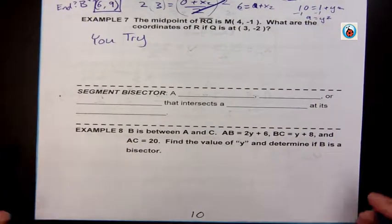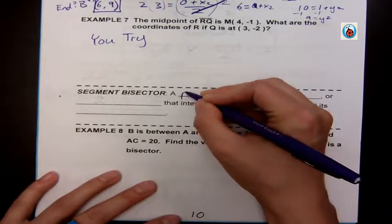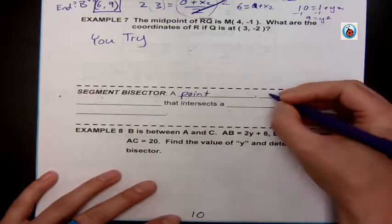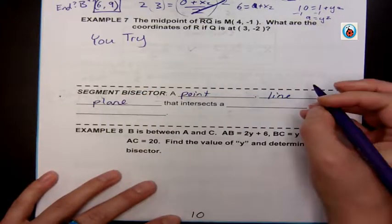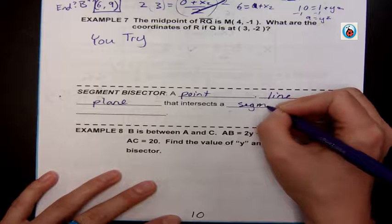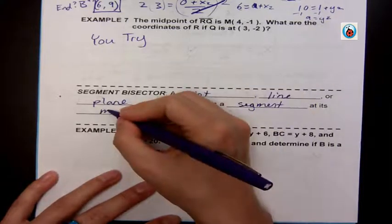Alright, segment bisector is the same, pretty much, as midpoint. It's just instead of a point, it can be a point, line, or plane that intersects a segment at its midpoint.